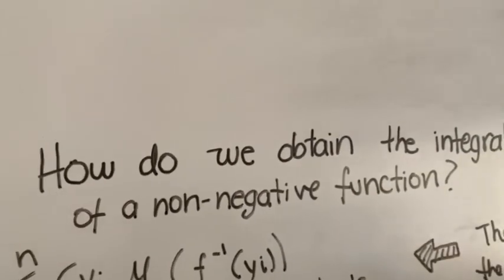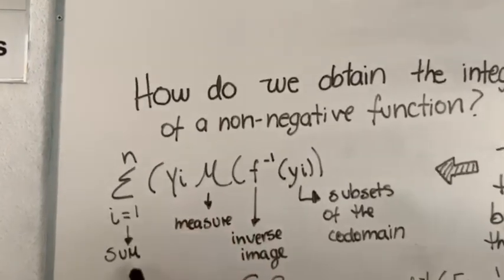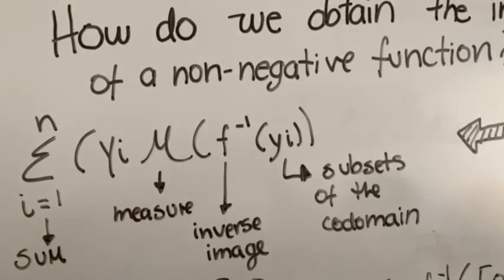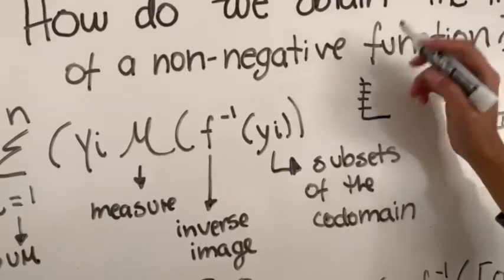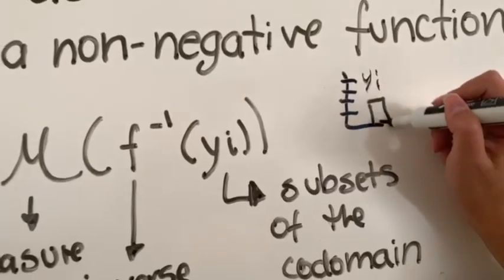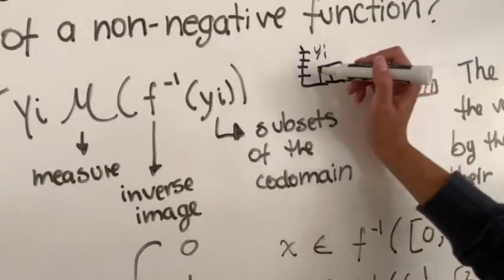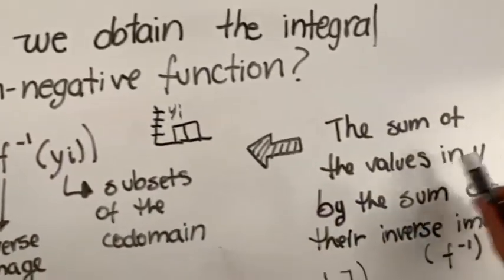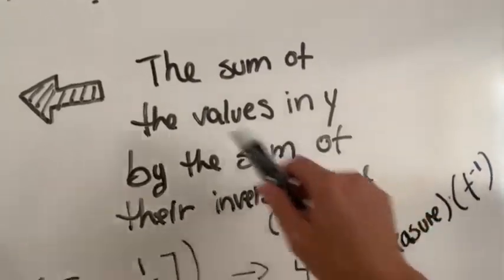We obtain the integral of a non-negative function using the formula where we sum the measure of the inverse image times the y-value for each subset of the codomain. The y represents the values we divide the codomain into, and the inverse image gives the corresponding subsets of the domain. The sum of the y-values times the measures of the inverse images gives us the integral.